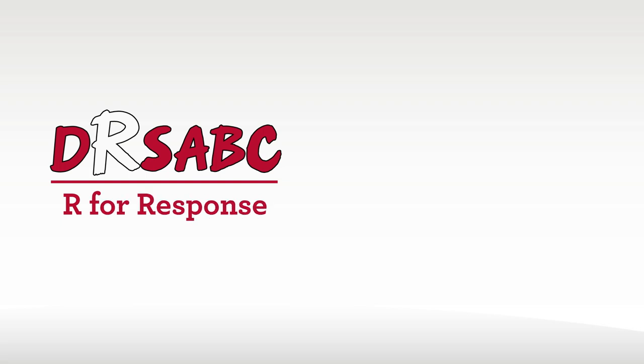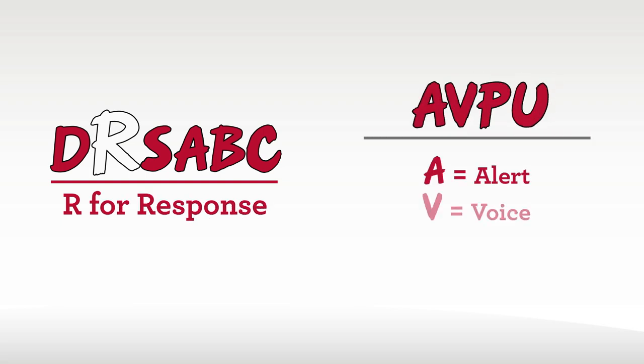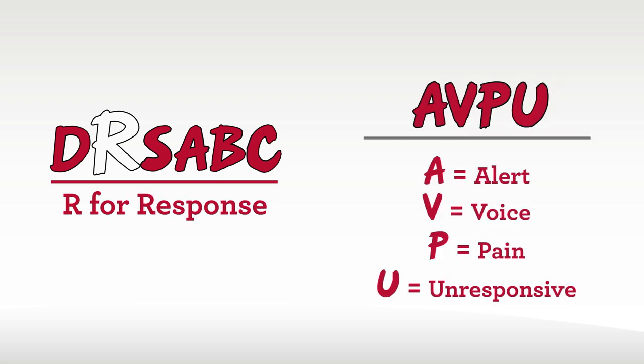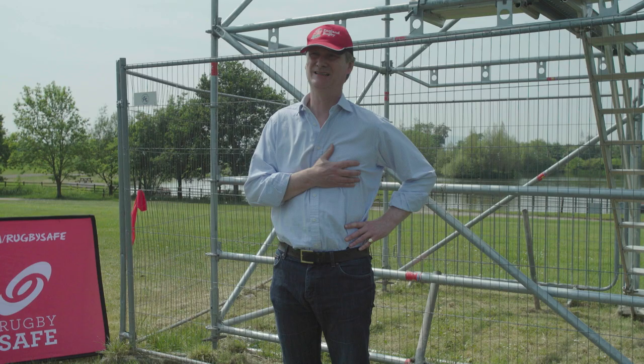The next stage is R for response. We use the AVPU scale to assess response. The first aider finds a patient complaining of feeling unwell and looking pale with an increased and effortful breathing rate. She must quickly find out any relevant medical history.